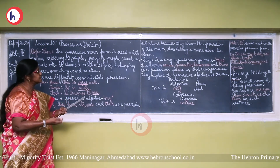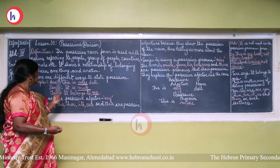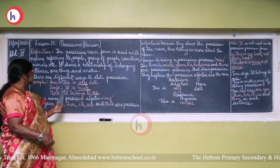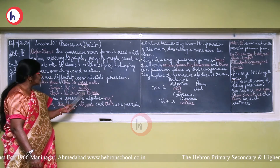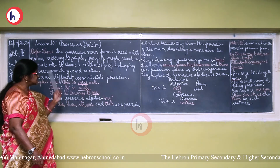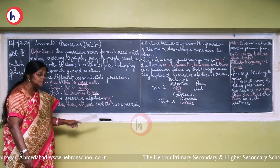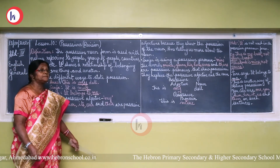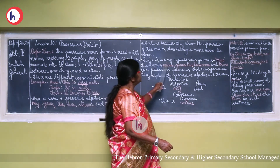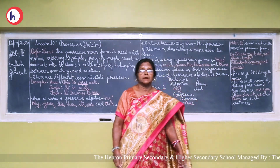A possession tells us the thing belongs to someone. The three ways of stating this are: 'This is my dog' using a possessive adjective; 'It is mine' using a possessive pronoun; and 'It belongs to me' using an object pronoun. It shows the relationship of belonging between one thing and another. I hope you have understood possessives, children. Thank you.